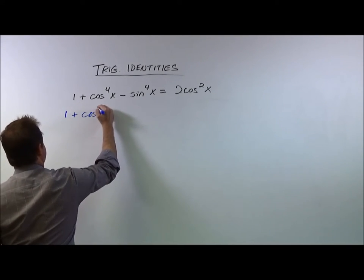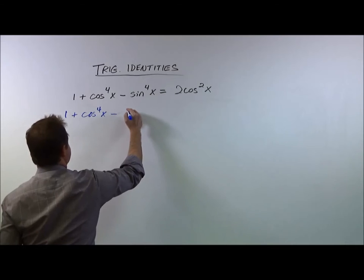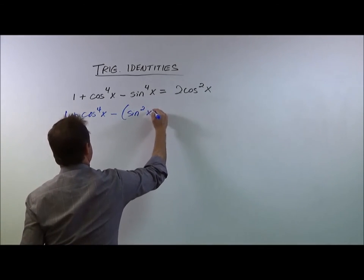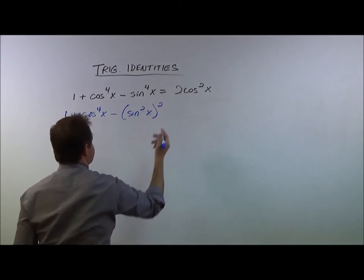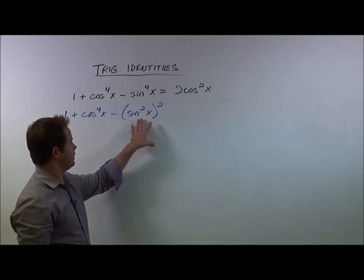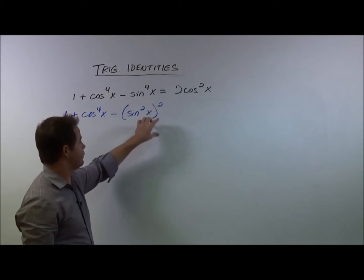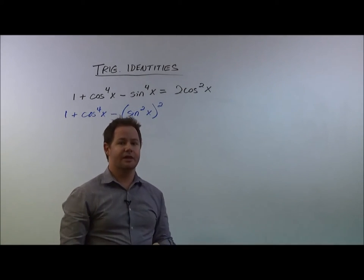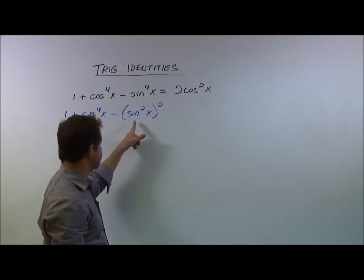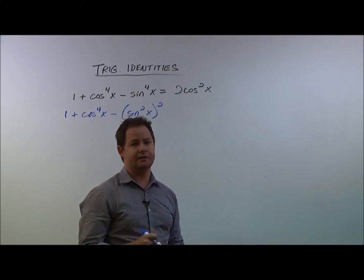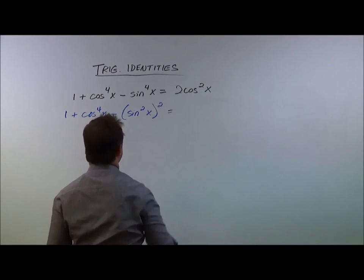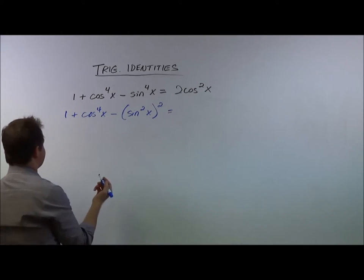1 plus cosine to the fourth of x, haven't changed anything there, minus. And here I'm just gonna put sine squared of x squared. So when you square sine squared, you get sine to the fourth. But if we leave it like sine squared inside the parentheses, then that'll help us simplify because sine squared does have an identity that we're familiar with, and it's that Pythagorean identity we just mentioned. So let's go ahead and work with this a little bit further.